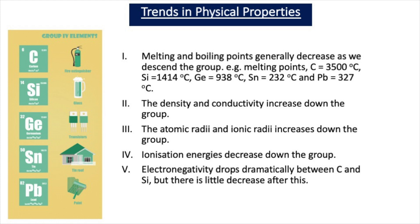Electronegativity is the ability of an atom within a covalent bond to attract a shared pair of electrons. As we go down group 4, electronegativity decreases, but not in a linear fashion. It decreases dramatically between carbon and silicon, but after silicon there is little decrease. This is because as you go down the group there are more filled shells and more shielding, but germanium, tin and lead have lots of d and f orbitals which are not very good shielders of electrons, so the shielding quality decreases after silicon.